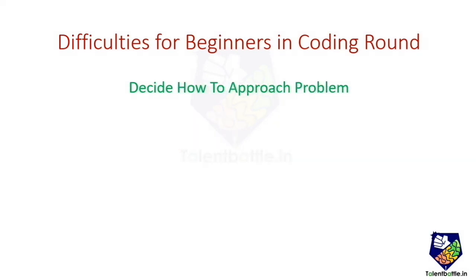The next common difficulty faced by beginners during the coding round is that they cannot decide how to approach a particular problem. To tackle this, the first point is to know your company — that is, know what kind of programming questions are generally asked by that company. If you have an idea about the difficulty level, it becomes easier to approach the problem. For example, in the TCS Ninja coding round, the difficulty level is fairly easy, so if your solution is getting too complicated, your thought process is likely going in the wrong direction.